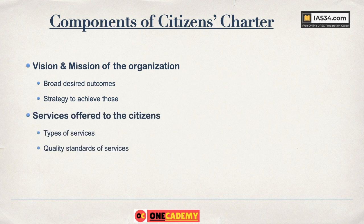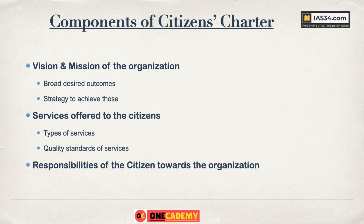The second component is services offered to the citizens — this lists out what types of services and what quality of services citizens should expect. The third and most important component is the responsibilities of the citizen towards the organization. It is not one-way. Even the citizen has some responsibilities towards the organization, and that has to be listed in the Citizens Charter.